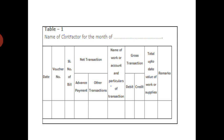In the contractor ledger, what are all the things required, what should be there, how exactly the amount is given to the contractor — whether it is a lump sum amount, an advance payment, or a running payment — how that can be entered into the contractor ledger. The contractor ledger will be there in government offices and has to be maintained in two copies.